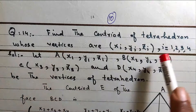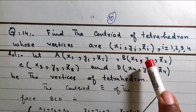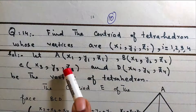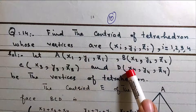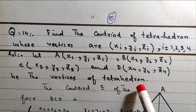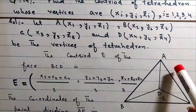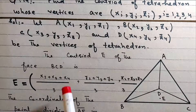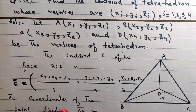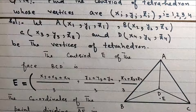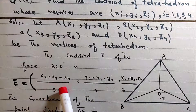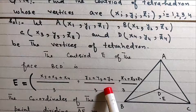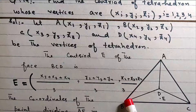Now find the centroid of the tetrahedron whose vertices are (xi, yi, zi) for i = 1, 2, 3, 4. Let A = (x1, y1, z1), B = (x2, y2, z2), C = (x3, y3, z3), D = (x4, y4, z4). The centroid E of face BCD has coordinates: x2 plus x3 plus x4 divided by 3, y2 plus y3 plus y4 divided by 3, z2 plus z3 plus z4 divided by 3.